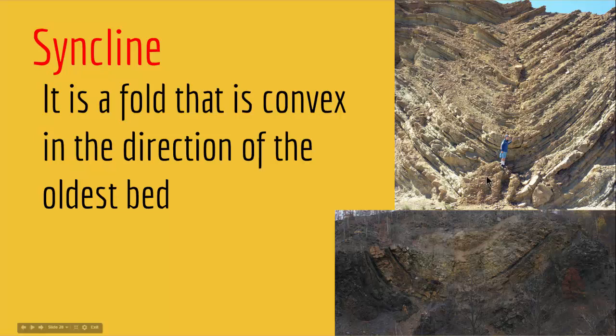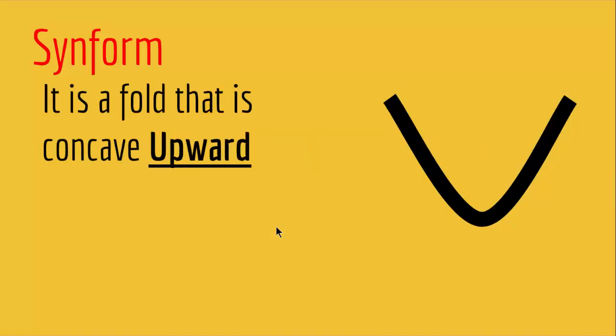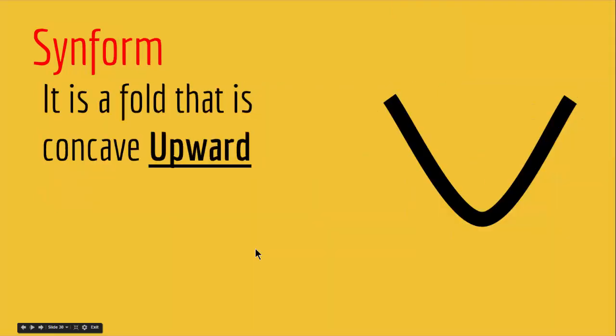Since you have a convex in the direction of the oldest bed, you have a syncline just like you see in this picture. But if you don't know whether the convex is in the direction of the oldest or youngest bed, in that case we call it a synform. A synform is a fold that is concave upward. Synclines are convex in the direction of the oldest bed and are U-like in shape, but synforms are folds that are concave upward when you don't know whether your oldest layer is on top or at the bottom.